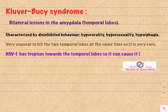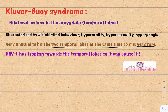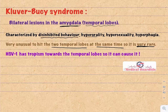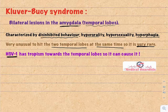Kluver-Bucy syndrome is a very rare syndrome requiring bilateral lesions of the amygdala in the temporal lobes. It is characterized by disinhibited behavior including hyperorality, hypersexuality, and hyperphagia. While it can theoretically be caused by stroke, it is far more likely caused by herpes simplex virus 1, which has tropism for the temporal lobes.